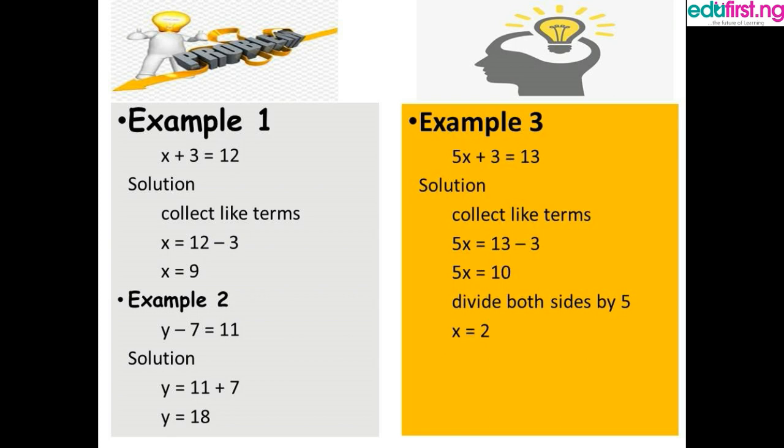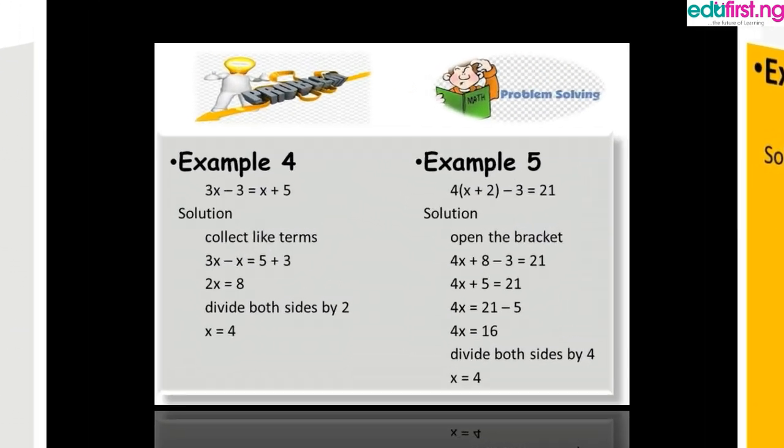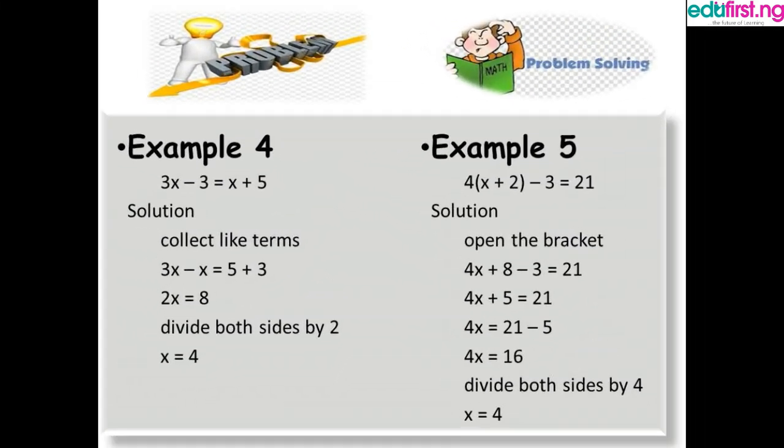When we divide both sides by 5, x equals 2. Now let's move to Example 4: 3x minus 3 equals x plus 5. I want to show that the expression on the left side is equal to the expression on the right side.